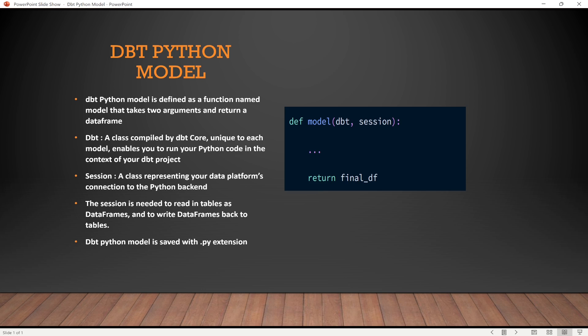A dbt Python model is defined as a function named 'model' that takes two arguments and returns a dataframe. You define it using the 'def' keyword, then the name 'model', and it takes two arguments: 'dbt' and 'session'.